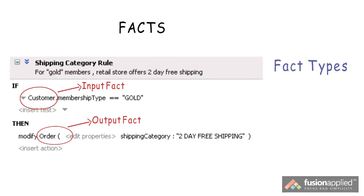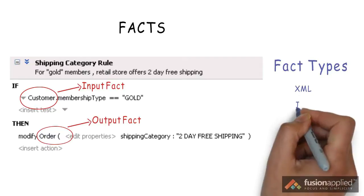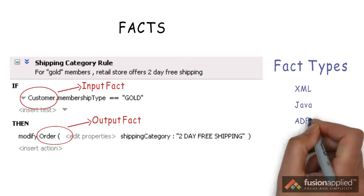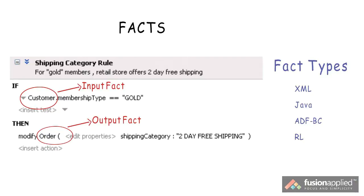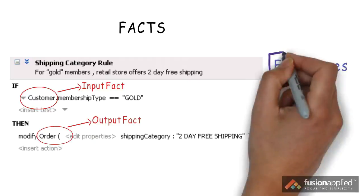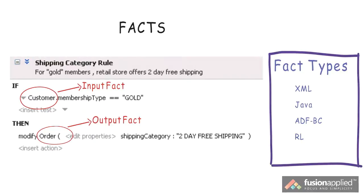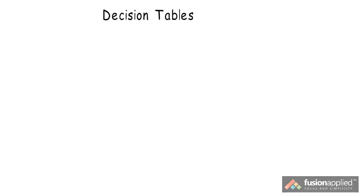Oracle BPM supports different types of facts including XML, Java, ADFBC, and RL. RL is a native type supported by Oracle business rules. So far we've looked at business rules expressed as if statements. Business rules can also be expressed in decision tables.